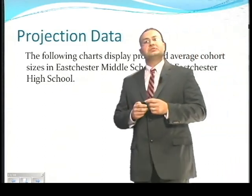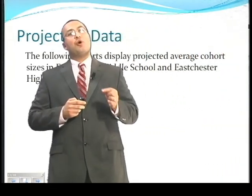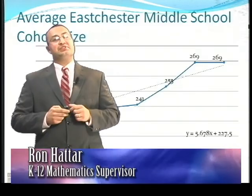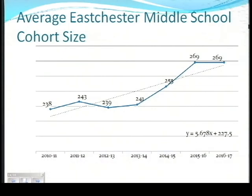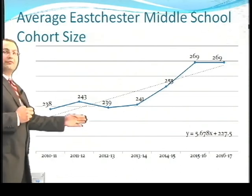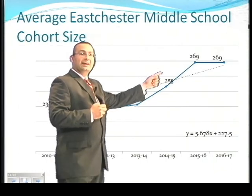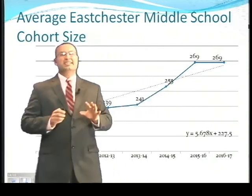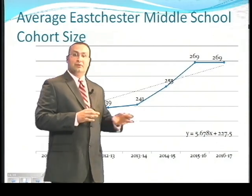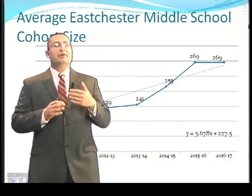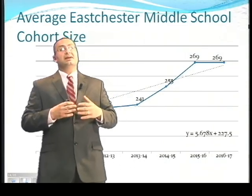Looking at projected average cohort sizes at the middle school and high school campuses: at East Chester Middle School in the 2010-2011 school year, each class size averages 238 students. There will be 243 students on average next school year, and as we progress throughout each school year, the average class size is actually increasing to about 269 students on a grade level. I also applied a linear regression model to this trend to help gain a better understanding of projections and class sizes going forward.